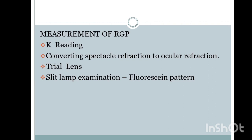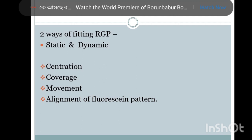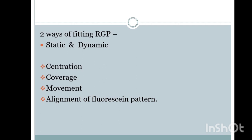You need to check the static and dynamic fit for a RGP contact lens. Apply fluorescein dye and check the fit. Static fit means when the lens is not moving; dynamic fit means when the lens is moving. In static and dynamic fitting, check the centration of the lens, coverage of the lens, movement of the lens, and alignment of the fluorescein pattern. Tell the patient to blink and look forward — evaluate the fluorescein fit in the primary position of gaze for the static fit.